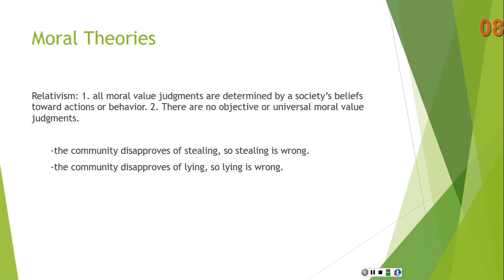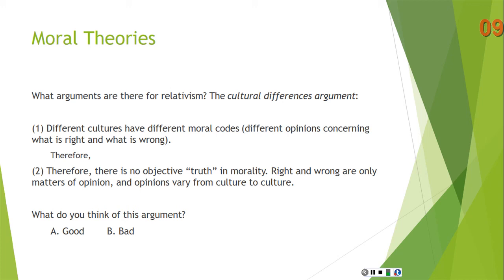If a society thinks something is wrong, then it's wrong. If it thinks something is right, then it's right. There's nothing more to morality than that. Now let's get to an argument for relativism — the cultural differences argument. This says that different cultures have different moral codes; therefore, there is no objective truth in morality. Right and wrong are only matters of opinion, and opinions vary from culture to culture.